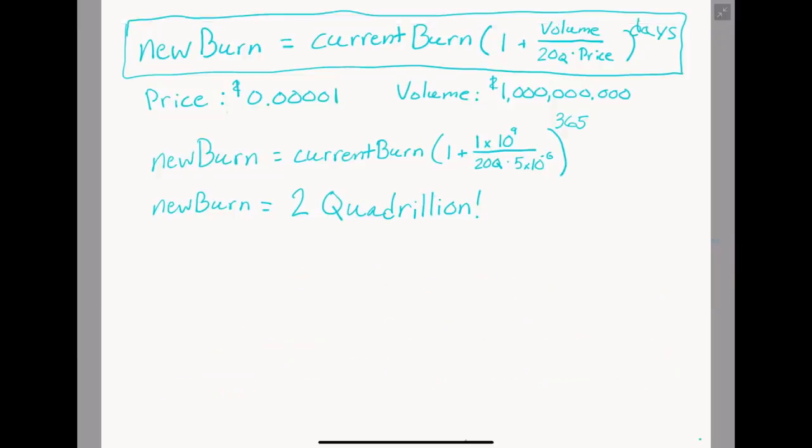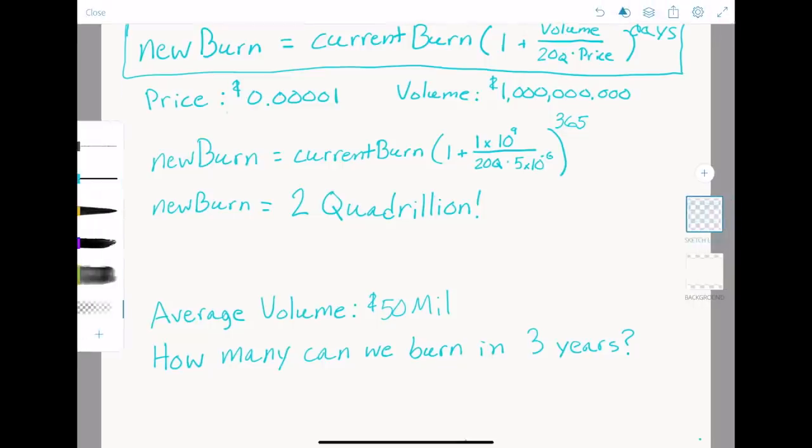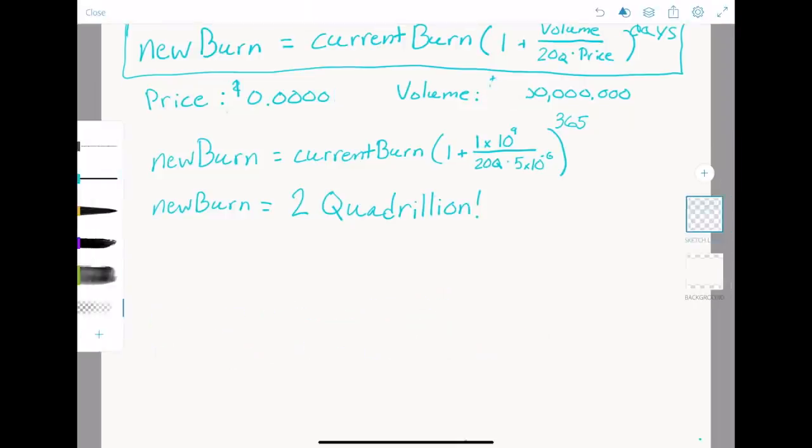Okay, enough hypotheticals. SafeMoon has seen 587 million dollars before as its highest volume, and lately it has been around the 50 million dollar mark. Where could the burn wallet reasonably be in three years? Well, let's assume the worst case. Let's assume the exchange, the debit card, everything barely raised the volume at all. Maybe it will raise it up to 75 million dollars.